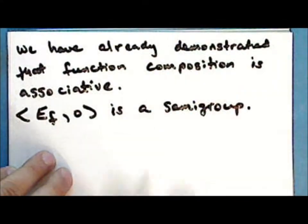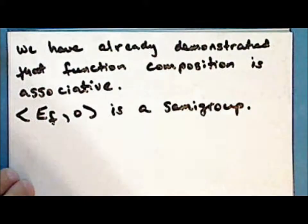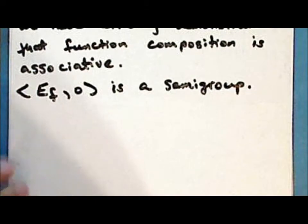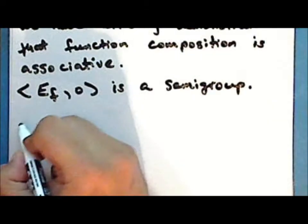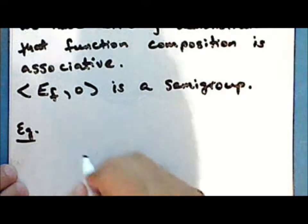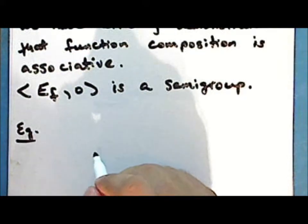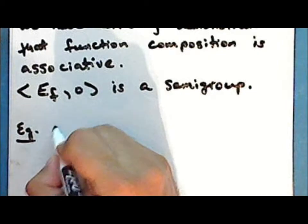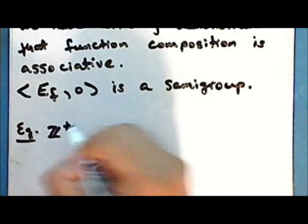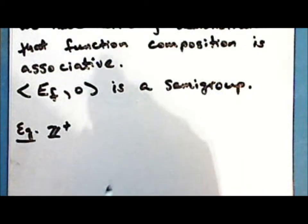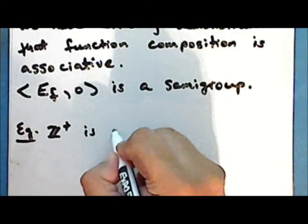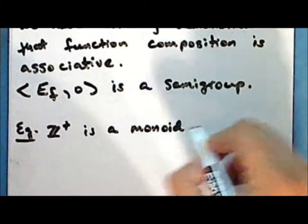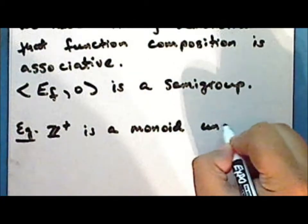We call this the evolution semigroup generated by the function f. The next exercise from the previous lecture will show that the set of positive integers is a monoid under multiplication, but is not a monoid under addition.